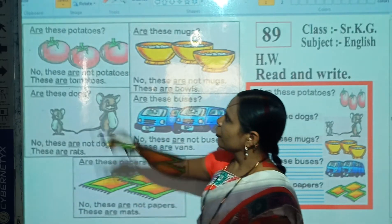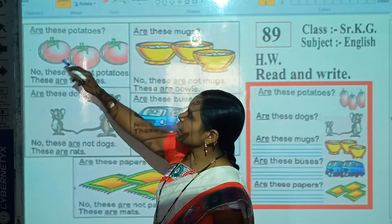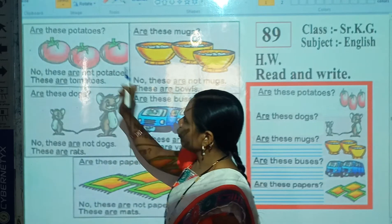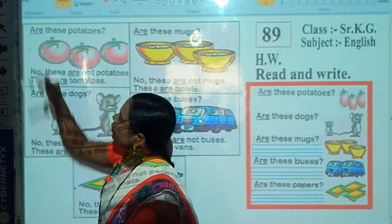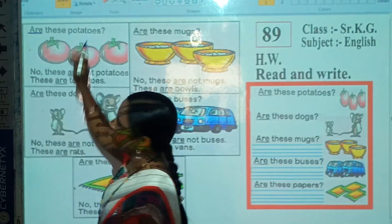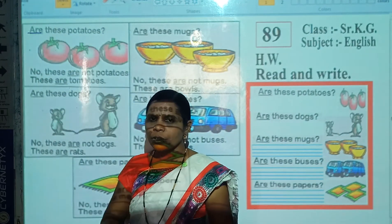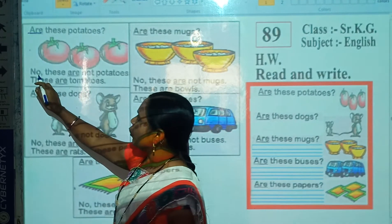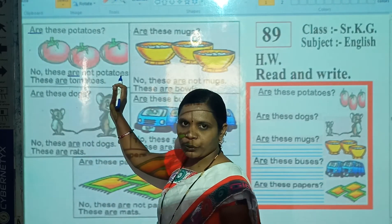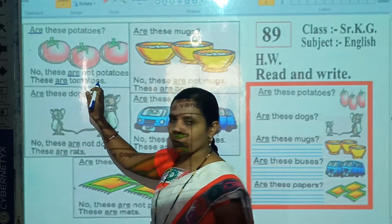Now look here. Which picture is this? Correct, this is the picture of tomatoes. Now look at this question: Are these potatoes? No, these are not potatoes. These are tomatoes.